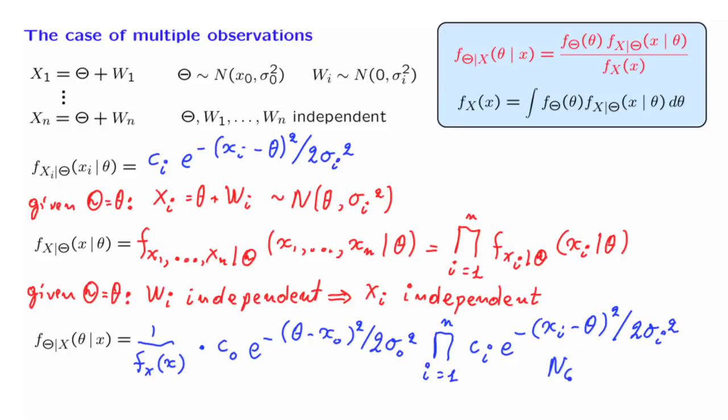It has to correspond to a normal distribution. And this is the first conclusion of this exercise. That is, the posterior PDF of the parameter theta, given our observations, this posterior PDF is normal. We have e to a quadratic function in theta, and that quadratic function also involves the specific values of the x's that we have obtained.